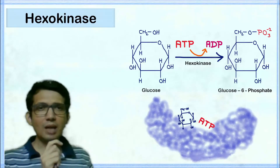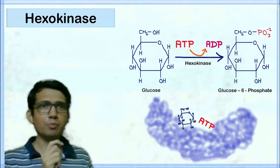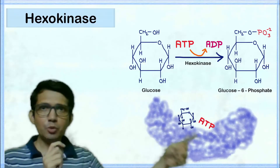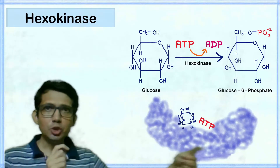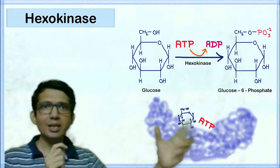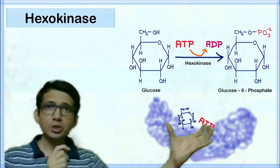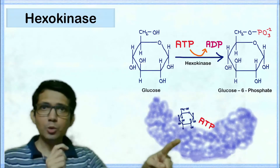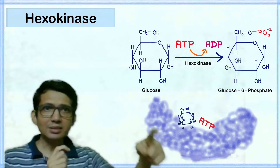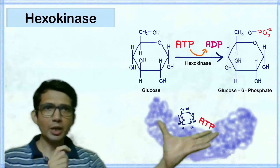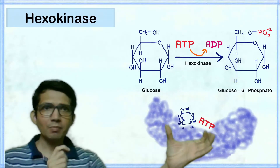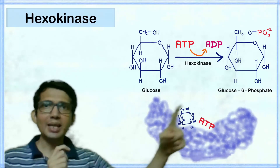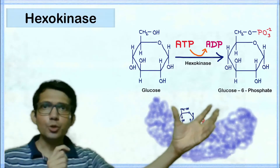Hexokinase is a classical example of an induced fit model. The induced fit model means whenever the substrate binds with the enzyme, there is a change in the shape of the active site and the conformation of the enzyme. So when the substrate glucose and ATP bind with the enzyme, the enzyme undergoes a conformational change, and because of this conformational change, these two domains of the enzyme come closer to one another.